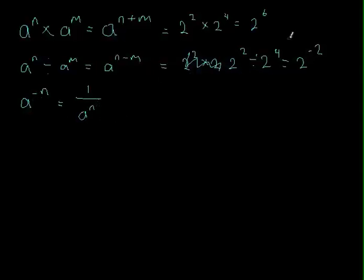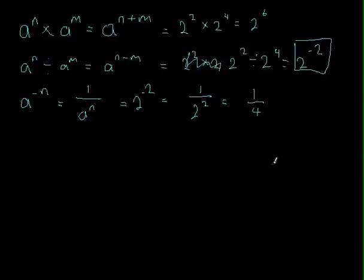So if we put that into practice for this one here, so we might as well write this down, 2 to the minus 2, that's going to be 1 over, to get rid of the minus, 2 to the power of 2, which is then simplified to 1 to the power of 1 divided by 4, which is a quarter.